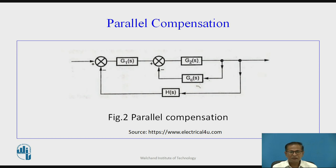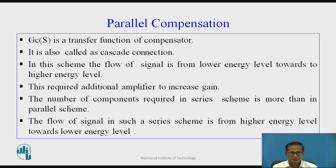This is the block diagram of parallel compensation. G(s) is the transfer function of the forward path, H(s) is the transfer function of the feedback path, and Gc(s) is the transfer function of the compensator which is connected in parallel. In this scheme, the flow of signal is from lower energy level towards higher energy level, requiring an additional amplifier to increase the gain.